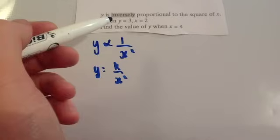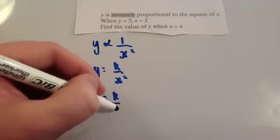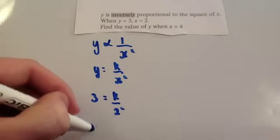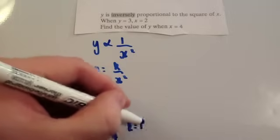When Y equals 3, X equals 2. So, whenever Y equals 3, X equals 2. So, you get 3 equals K divided by 4. So, times to get K equals 12.